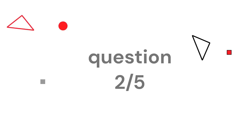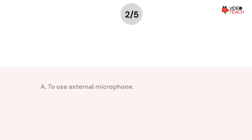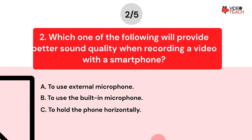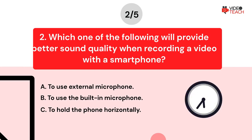Question number two. Which one of the following will provide better sound quality when recording a video with a smartphone? Option A, to use an external microphone. Option B, to use the built-in microphone. Option C, to hold the phone horizontally. Now you have about 15 seconds to think about your answer.